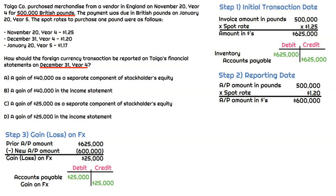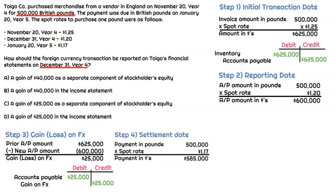Let's continue on to step four, which is the settlement date — January 20th, year five. The spot rate for that date is $1.17 per British pound. We need to figure out what Toygo is actually going to pay in cash. In step four, when we multiply 500,000 pounds times $1.17, the actual payment in dollars is $585,000. That's a little lower than the last time we valued that invoice at December 31, year four, which was $600,000. So in step five, we have another gain on foreign exchange of $15,000.